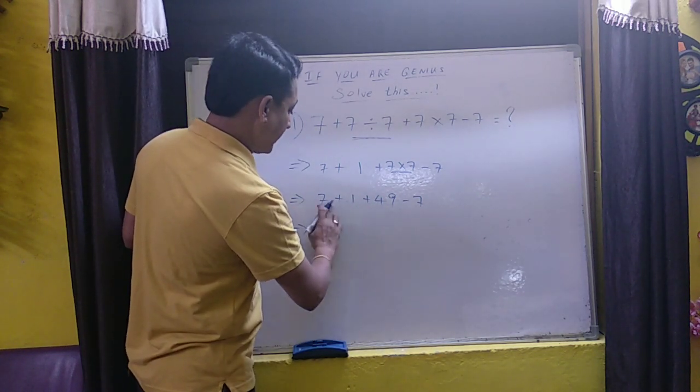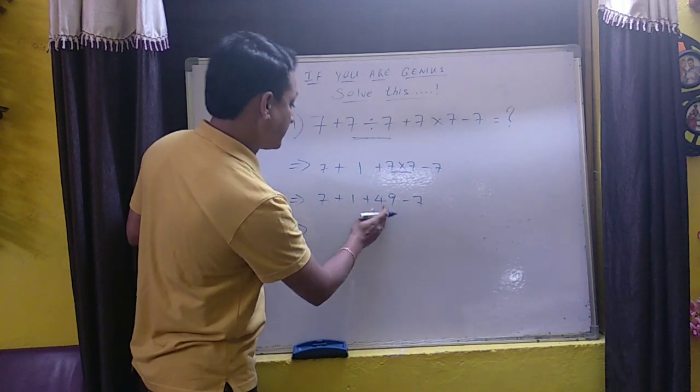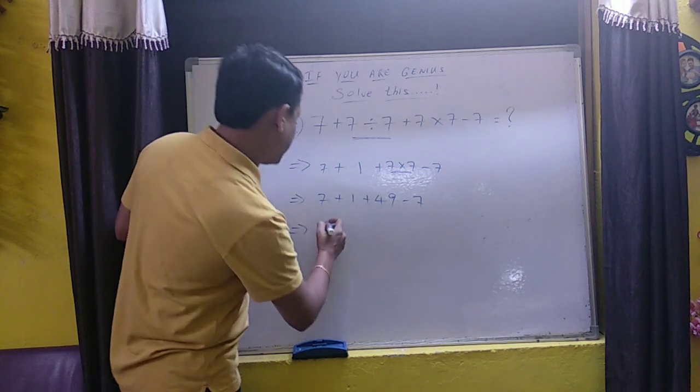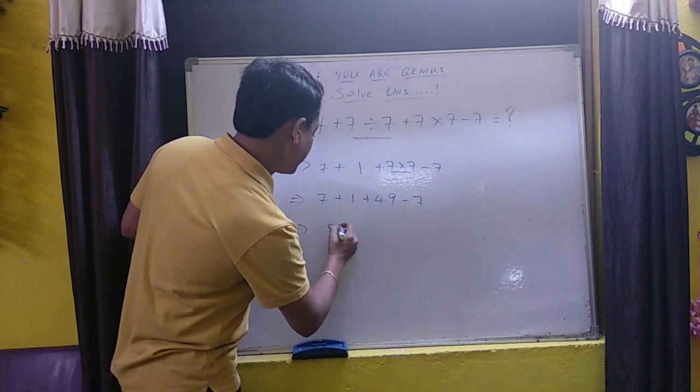So next we have to add these numbers. 7 plus 1 is 8, 8 plus 49 is 57 minus 7. That is answer is 50.